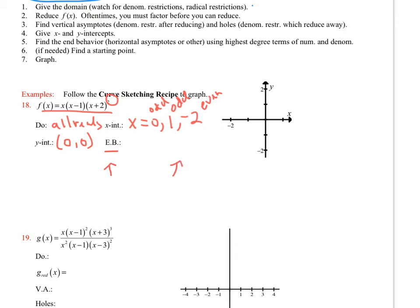Graphing number 18: the curve goes through the zeros at x equal to 0 and x equal to 1, and bounces at x equal to negative 2. So the graph bounces at negative 2, goes through 0, goes through 1, and both ends go off to positive infinity as expected for a fourth-degree polynomial. That's the graph of that polynomial.